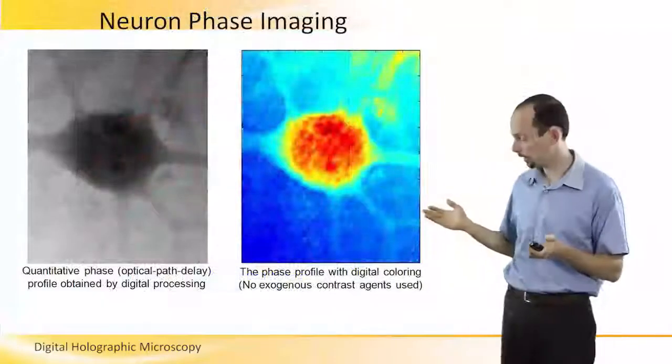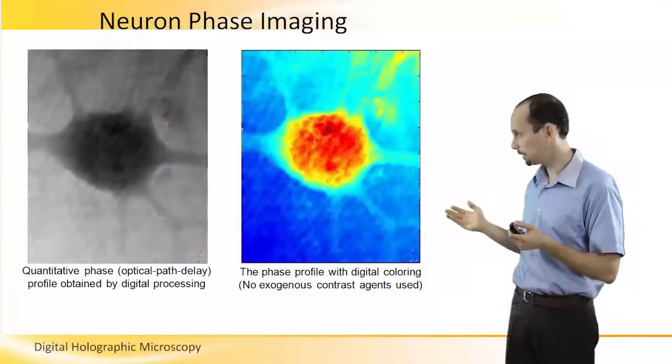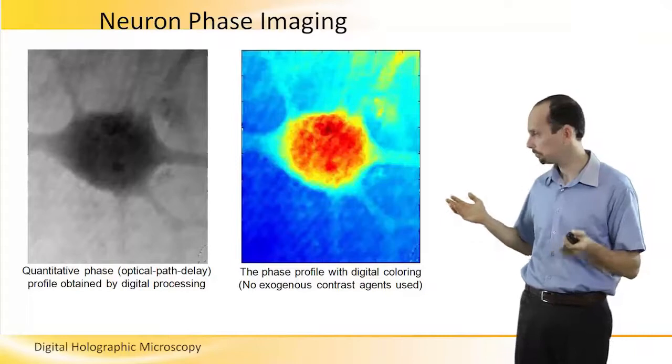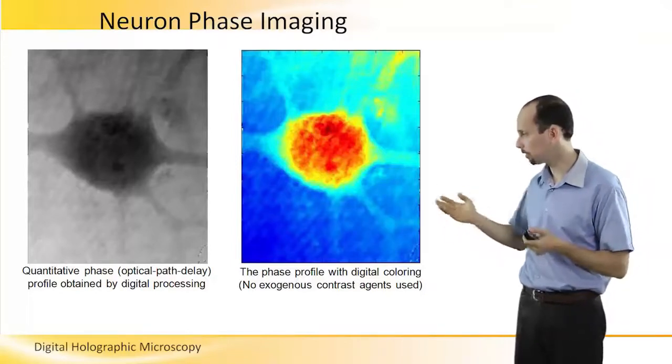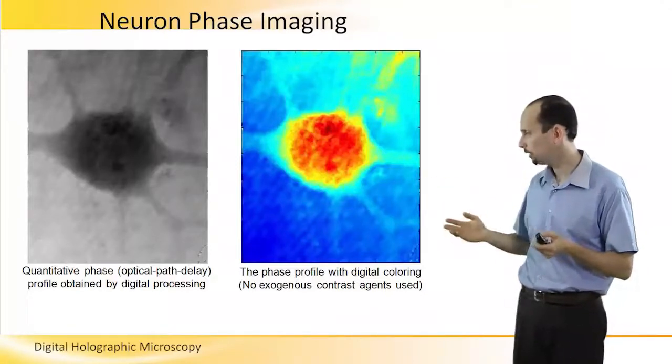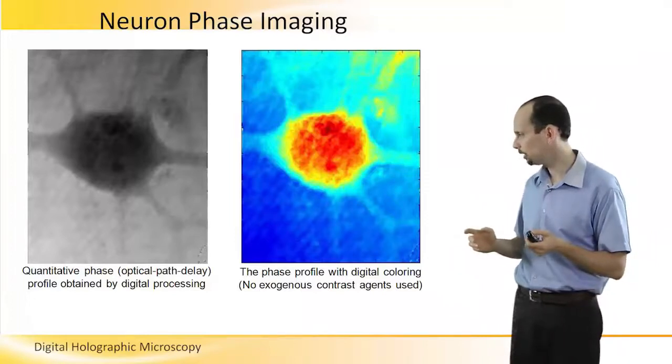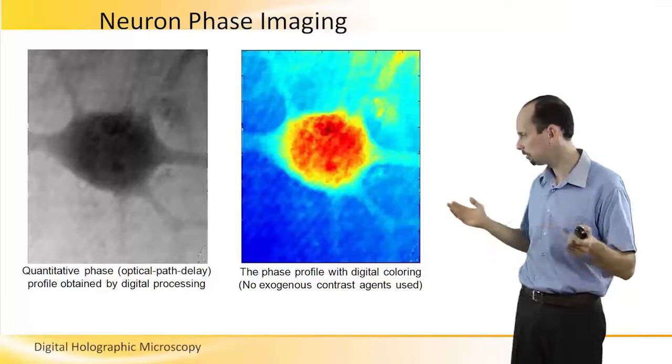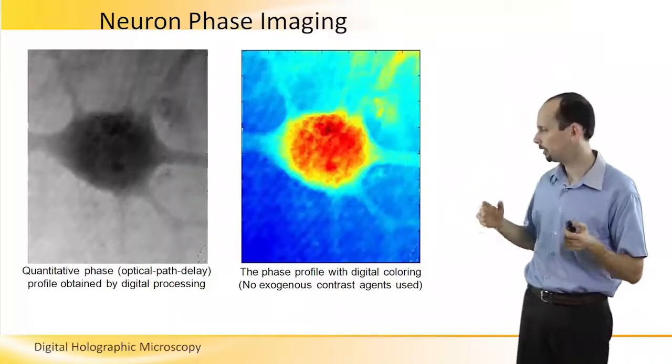Again, another example, imaging a neuron without any fluorescent dyes. So, you can see here the neurons and the dendrites and the axon, using digital coloring without external contrast agent. It looks like a very nice image.